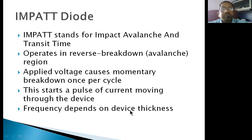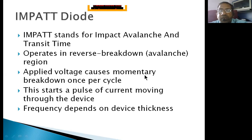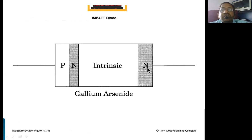The IMPATT diode operates in the breakdown region, similar to a general diode in reverse bias. The applied voltage causes momentary breakdown once per cycle, and the resulting pulse moves through the device. Frequency depends on the device thickness. The construction uses a P-I-N type structure: P-type, intrinsic, and N-type materials are used to construct the IMPATT diode.